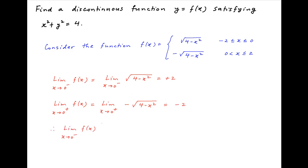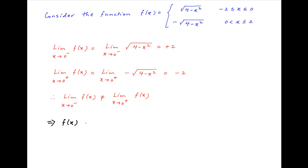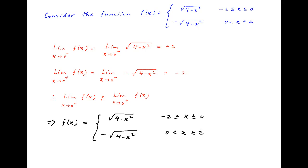Therefore, the limit of the function as x tends to 0 from the negative side is not equal to the limit of the function as x tends to 0 from the positive side. Therefore, f(x) — equal to root of (4 minus x²) when x is in [minus 2, 0] and minus root of (4 minus x²) when x is in (0, 2] — is an example of a function which satisfies the equation x² + y² = 4 but is discontinuous at x = 0, which is the required answer.